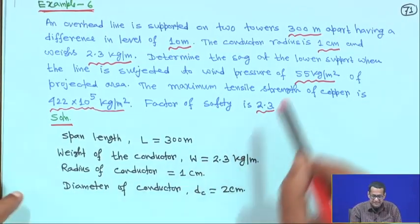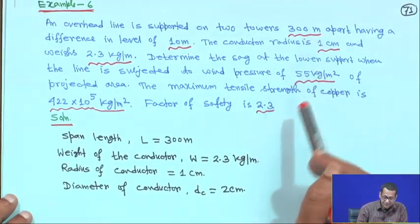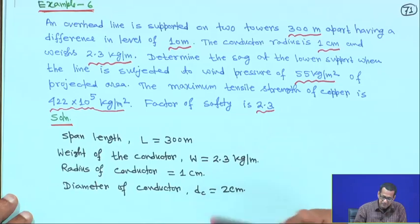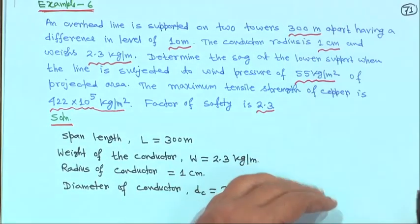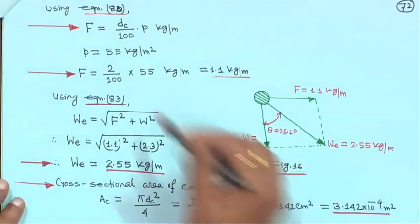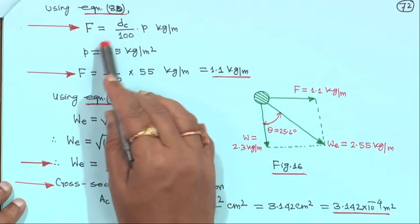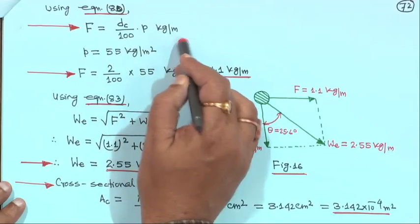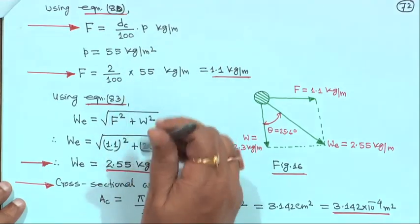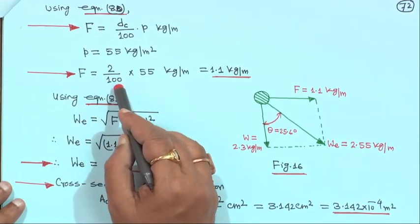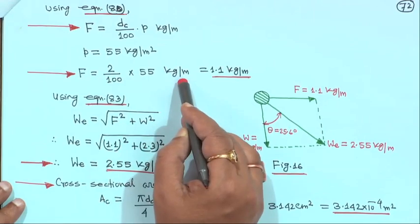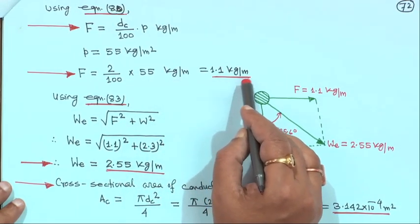Span length L is equal to 300 meter. Weight of the conductor is 2.3 kg per meter. Radius of conductor is 1 centimeter, so diameter DC is 2 centimeter. Using equation 80: F is equal to DC upon 100 into P kg per meter. P is given 55 kg per meter square, and DC is 2 centimeter. So F is equal to 2 by 100 into 55, which gives 1.1 kg per meter.